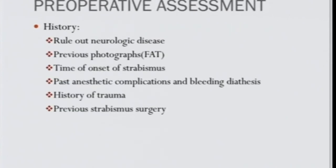Pre-operative assessment should rule out all neurological diseases. Previous photographs are very important as they may reveal a face turn not elicited in the clinic. It is also critical to check whether the patient has undergone surgery elsewhere — check on the slit lamp for any conjunctival scar. Note the time of onset of strabismus, and obtain history of past anesthetic complications such as bleeding, malignant hyperthermia, and succinylcholine apnea, which occurs in certain groups in South India following general anesthesia.